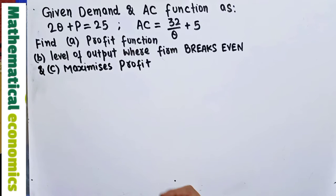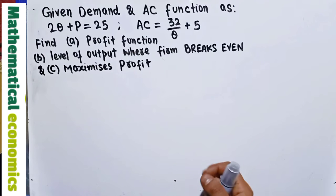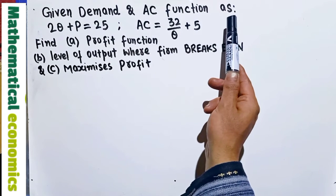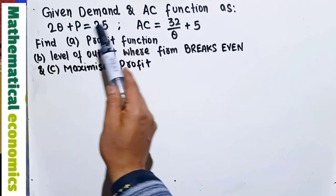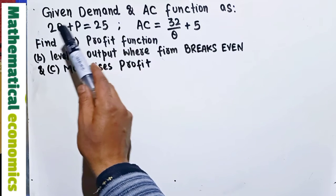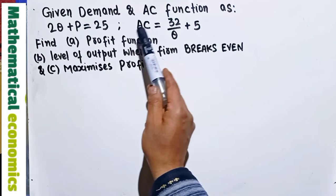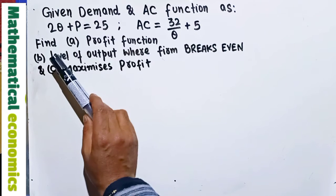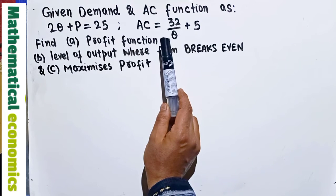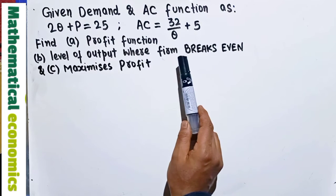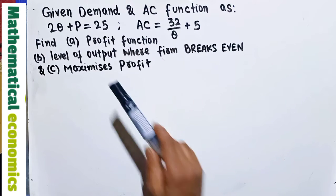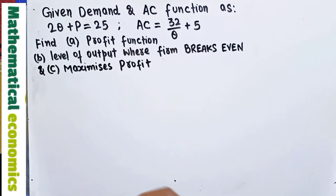Let us learn how to find out the level of output where a firm breaks even and maximizes profit. The question is: given the demand and average cost function of a firm — 2Q + P = 25, where Q denotes the output and P is the price — and the average cost is given as 32/Q + 5. We are told to find out the profit function, the breakeven output level, and the output level where the firm maximizes profit. So let us do it one by one.